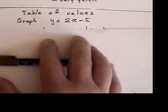Okay, now we're going to look at graphing by a table of values. So here is the question. Graph y equals 2x minus 5.